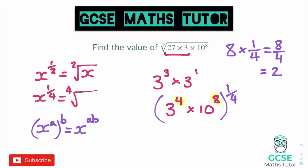Applying that to our expression: a quarter of 4 is 1, giving us 3 to the power of 1, and a quarter of 8 is 2, giving us 10 to the power of 2. So we have 3 to the power of 1 times 10 to the power of 2. That's 3 times 10 squared, which is 3 times 100, so the final answer is 300. We don't have to do any more working out — we've dealt with all those powers.